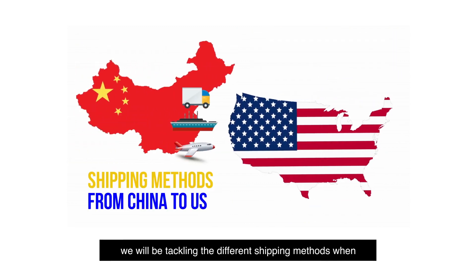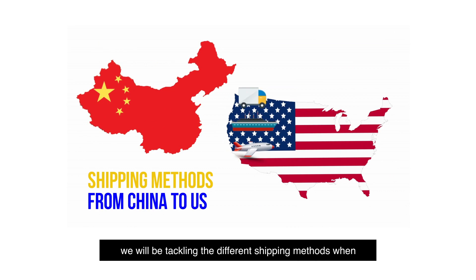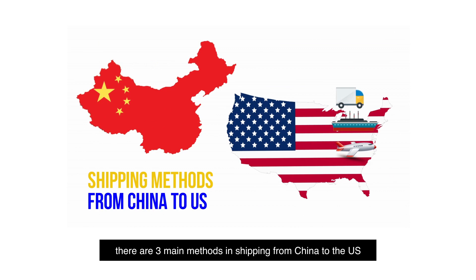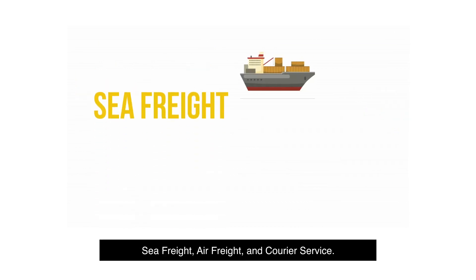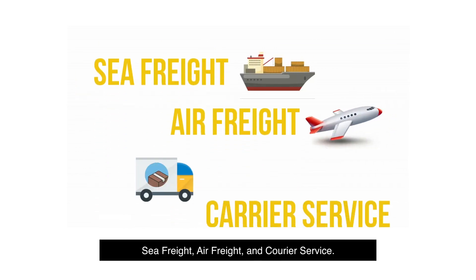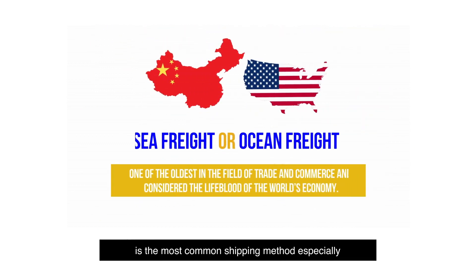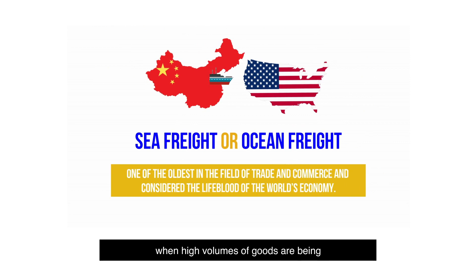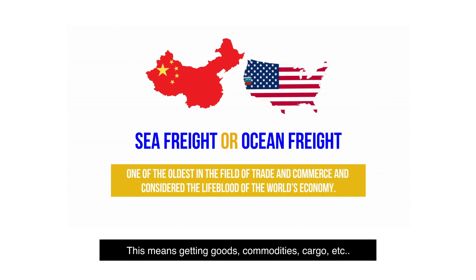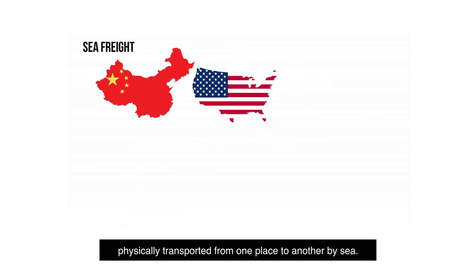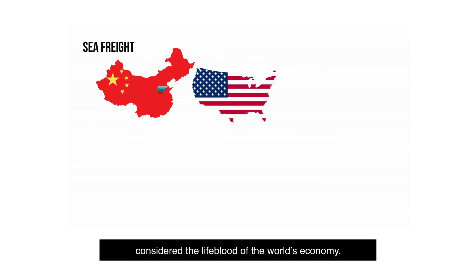In our second point, we'll be tackling the different shipment methods when shipping goods from China to the U.S. Primarily, there are three main methods: sea freight, air freight, and courier service. Sea freight, also known as ocean freight, is the most common shipping method, especially when high volumes of goods are being exported and imported. This means getting goods, commodities, cargo, etc., physically transported from one place to another by sea — one of the oldest fields in trade and commerce and considered the lifeblood of the world's economy.